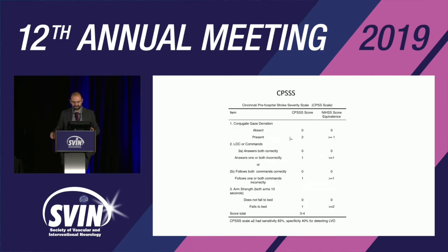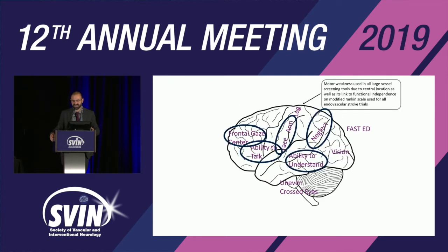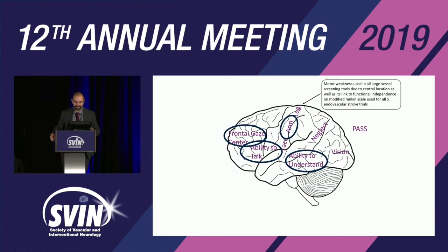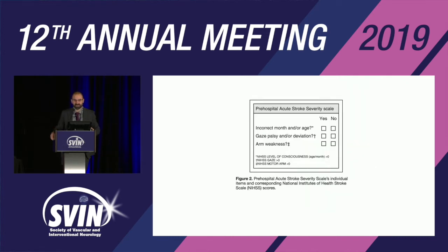The Cincinnati Pre-Hospital Stroke Severity Scale also looks at symptoms and adds them up. FAST-ED is very similar to RACE but doesn't test leg, because leg is less sensitive for LVO than face and arm. Arm is actually the most sensitive finding for LVO. PASS is one of the newer scales — you ask three questions and need two out of three positive.